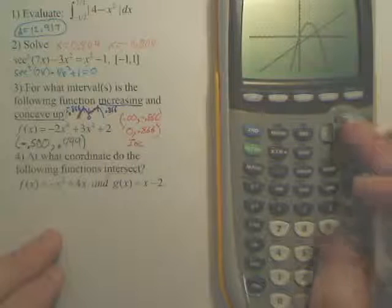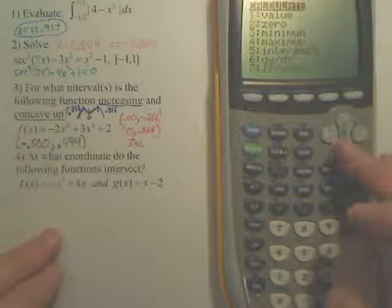You want to find out where they intersect. Basically, there's a button. If you second trace, see the word intersect?